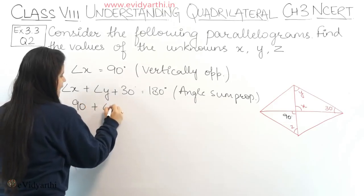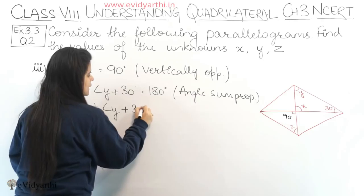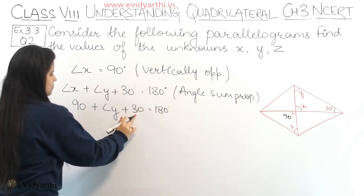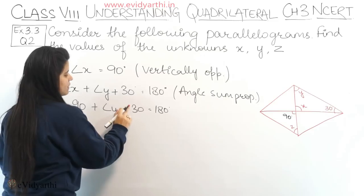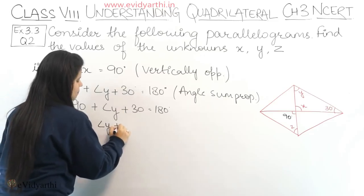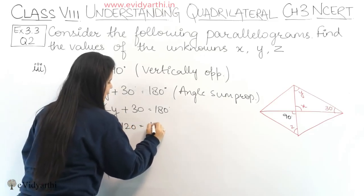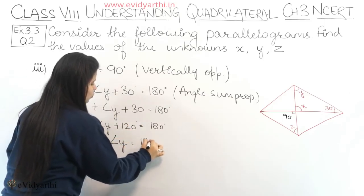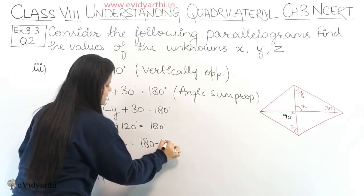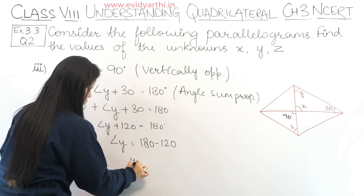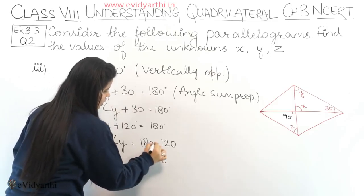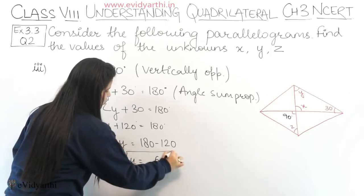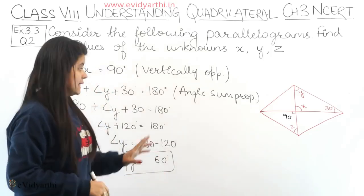Substituting x = 90°: 90 + y + 30 = 180. So 90 + 30 = 120, meaning y + 120 = 180. Therefore y = 180 - 120 = 60°.